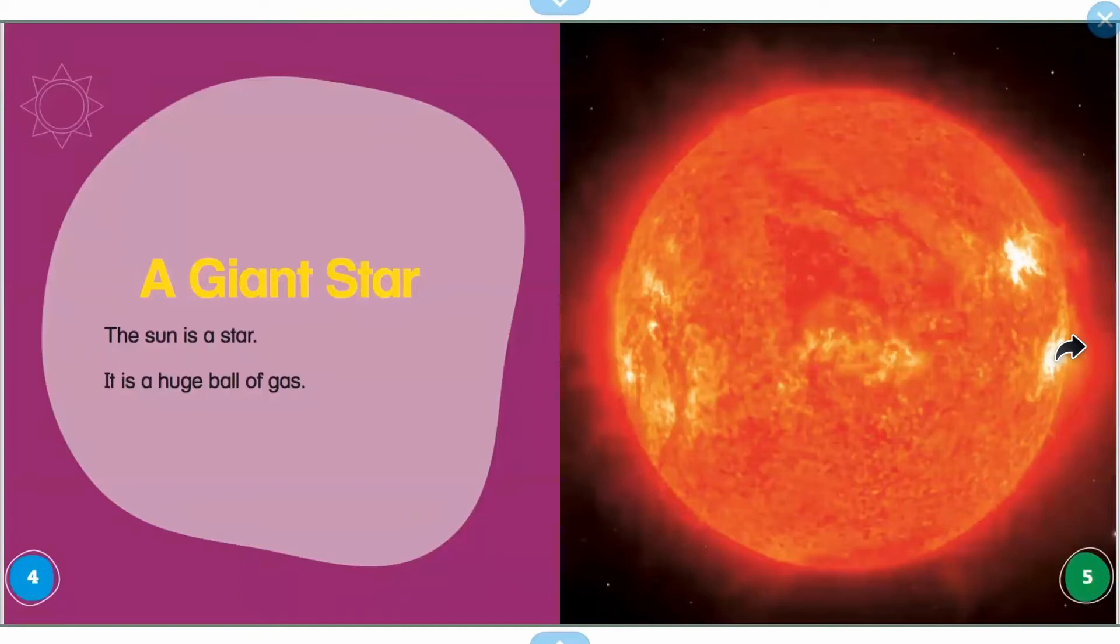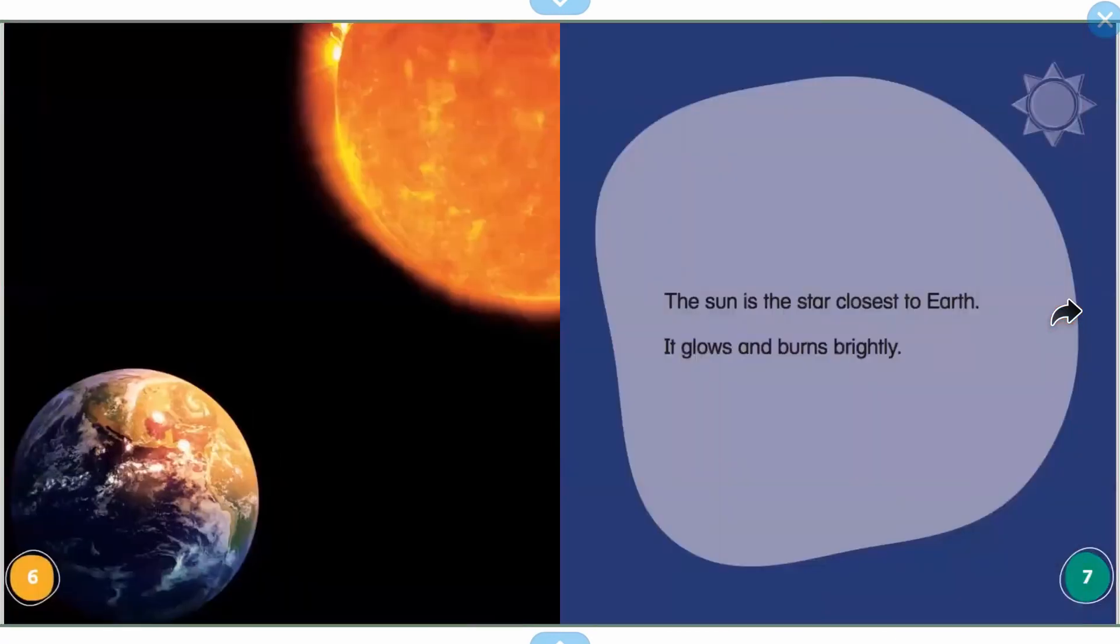A giant star. The sun is a star. It is a huge ball of gas. The sun is the star closest to the Earth. It glows and burns brightly.